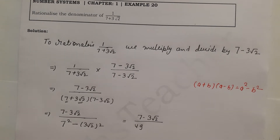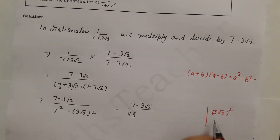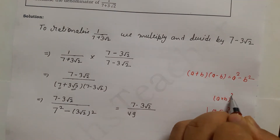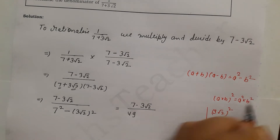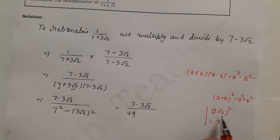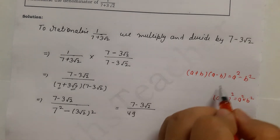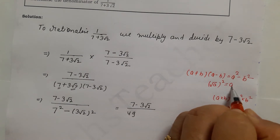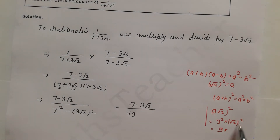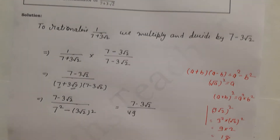7 squared is 49. Now for 3 root 2 squared: using the rule (ab)² = a²b², we get 3 squared times root 2 squared. 3 squared is 9, and root 2 squared is 2, so 9 times 2 equals 18.